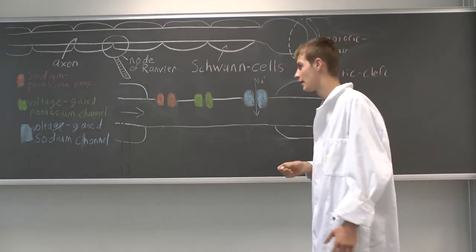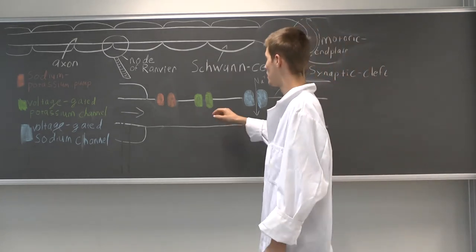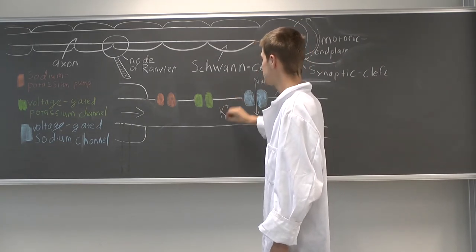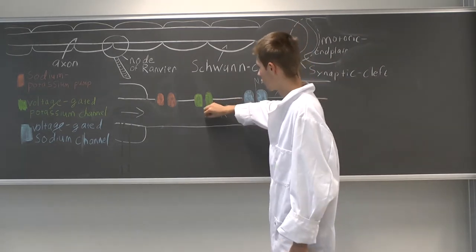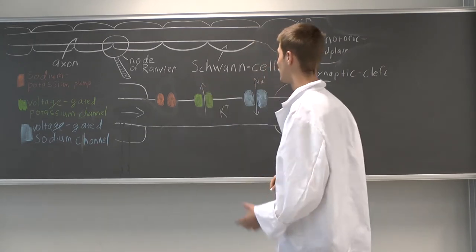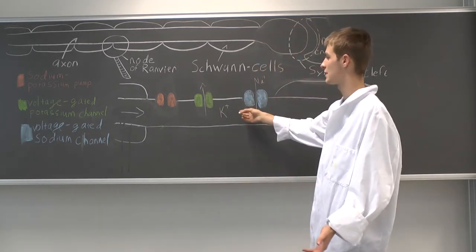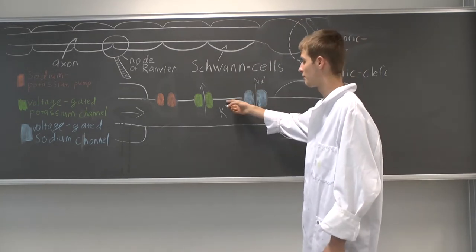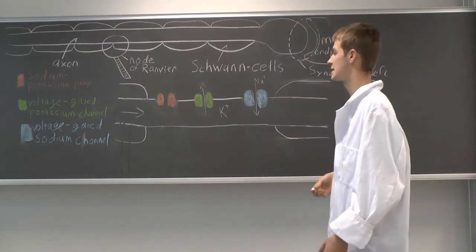As a consequence, the potassium channels open and the potassium ions which are on the inside rush out because of diffusion forces, because we have inside a higher concentration than outside, and because of the big positive charge on the inside.